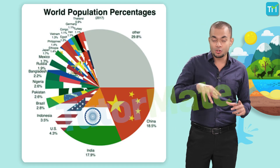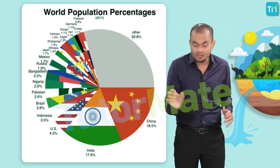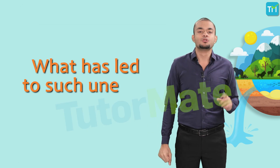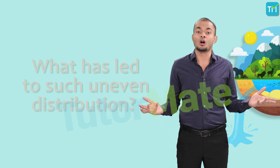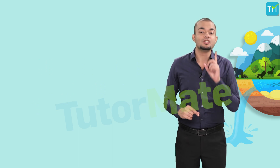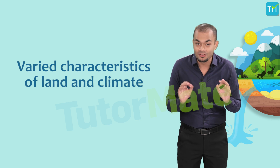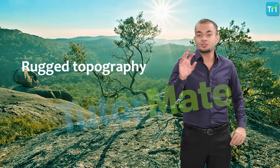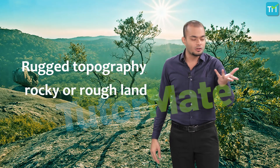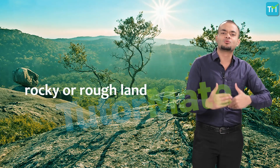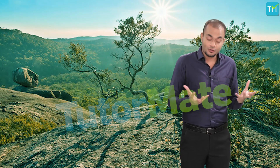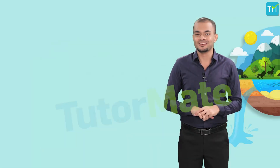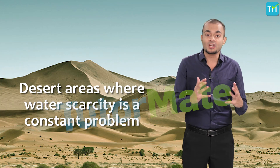This means that the distribution of population or life is uneven in different parts of the world. This is mainly due to the varied characteristics of land and climate. The rugged topography — referring to rocky or rough terrain — seen in certain parts of the world makes it difficult for human life to thrive. Steep slopes of mountains, low-lying areas prone to waterlogging, and desert areas where water scarcity is a constant problem are examples of such regions.